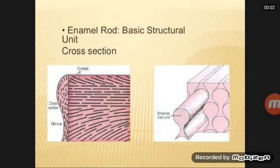Enamel is composed of enamel rods or prisms, rod sheath, and in some regions a cementing inter-prismatic substance.